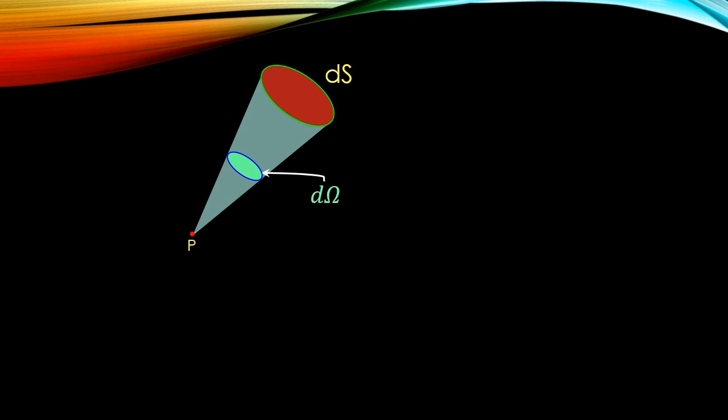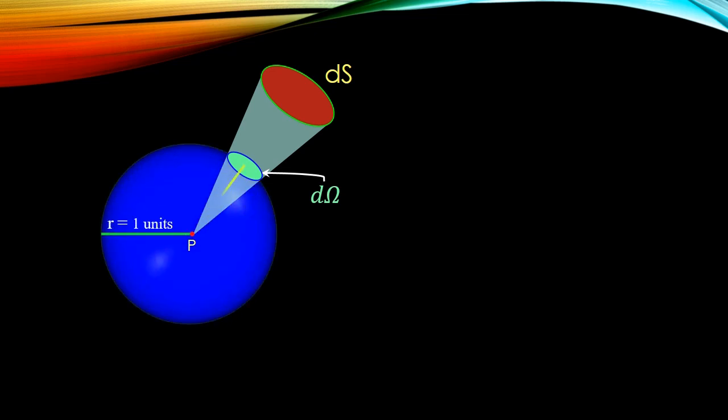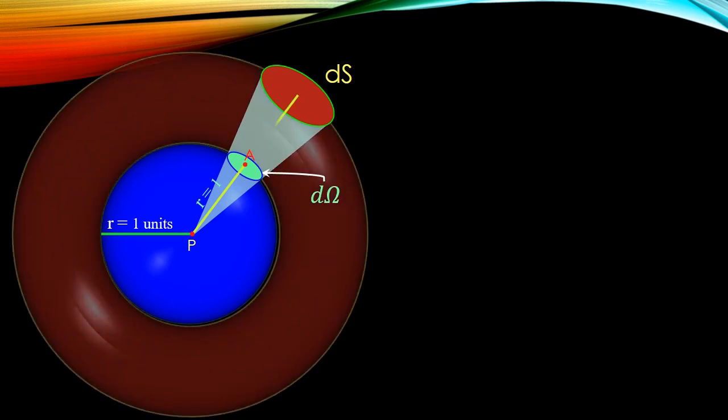So let us consider the solid angle to be at the surface of a sphere of radius 1 unit and the surface dS to be at the surface of a sphere of radius R units.